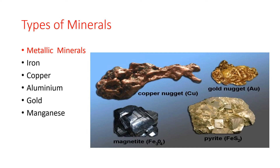First, iron. Pure iron is soft. It is used to make steel. Iron ore is converted into iron and steel in iron and steel plants. Large iron and steel factories are situated in Jamshedpur, Bhilai in Madhya Pradesh and Durgapur in West Bengal. Iron is used to make bridges, machines, railway engines and railway coaches. Iron is mainly found in Bihar, Jharkhand, Odisha, Goa, Karnataka and Madhya Pradesh.